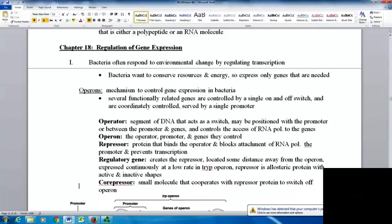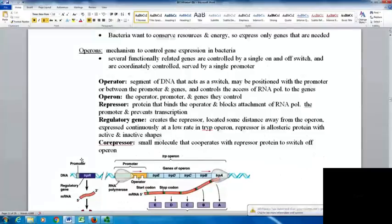These genes are coordinately controlled and served by a single promoter. The operator is the segment of DNA that acts as a switch and can be positioned within the promoter or between the promoter and the genes, controlling access of RNA polymerase to the genes.